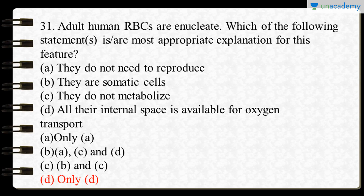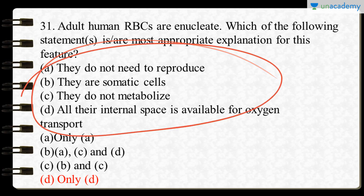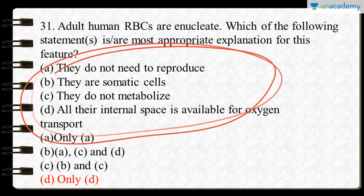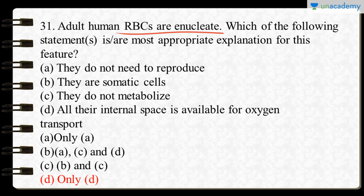The first question is that adult human RBCs are enucleated. Which of the following statements is the most appropriate explanation for this feature? During maturation, RBCs lose their nucleus and most cell organelles because they need more internal space in order to transport large amounts of oxygen, which is their major function.